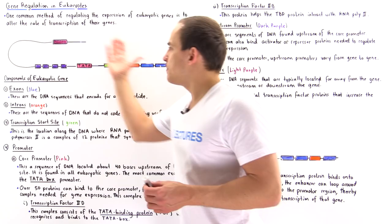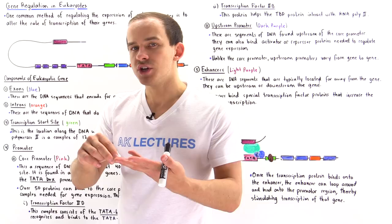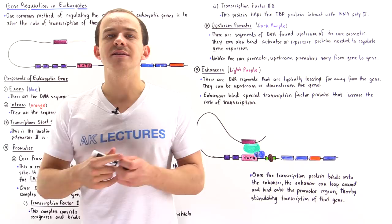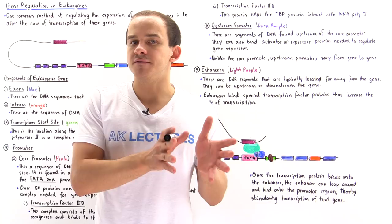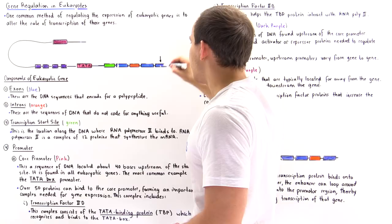This diagram describes a basic eukaryotic gene, and we have five important components: exons, introns, a transcription start site, promoters, and enhancers. In any eukaryotic gene, we have segments of DNA that actually do code for a polypeptide and those segments that do not code for a polypeptide.